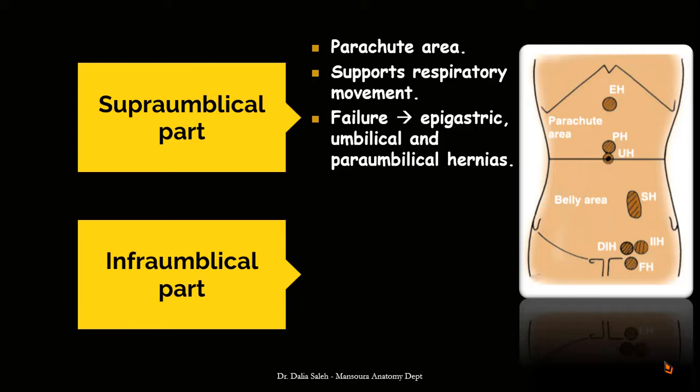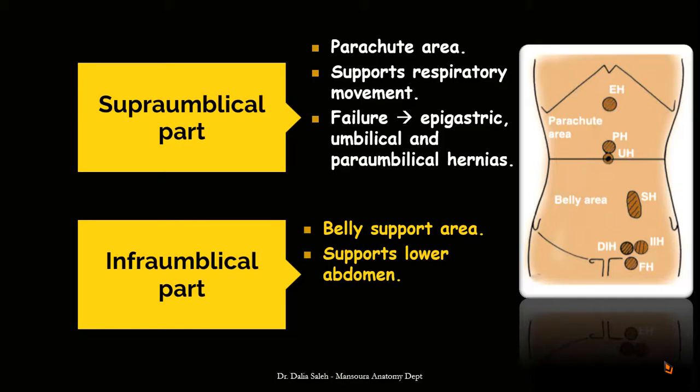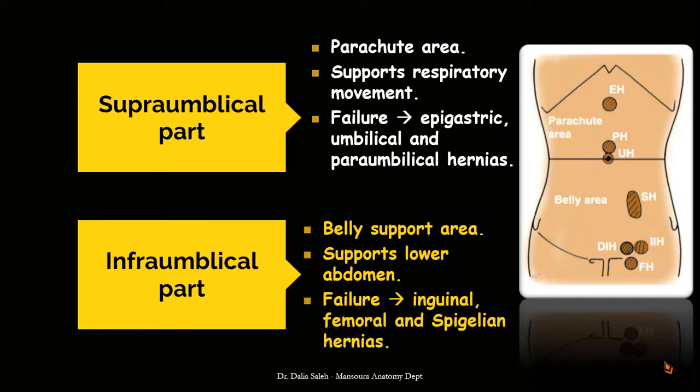The infraumbilical part of the abdomen is also called the belly support area. The arrangement of the muscle and aponeurotic fibers in this region is in a downward and medial type of arrangement. Even the muscle fibers of the rectus abdominis in its lower part approximate very closely or even overlap, helping to support the lower abdomen. Failure in this support mechanism leads to inguinal hernias (direct or indirect), femoral hernias, and spigelian hernias.